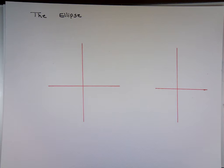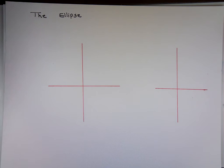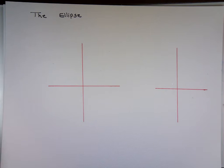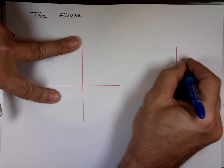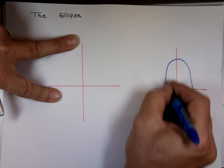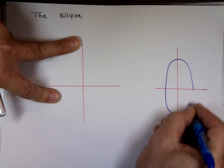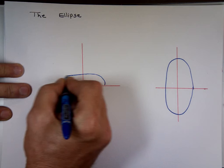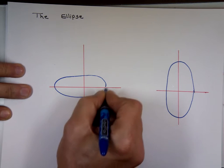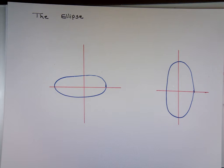An ellipse looks like a circle that somebody sat on and squished a little bit. So it's either going to be the shape of an egg — it will look something like this — or it's going to look something like this. That's the ellipse.